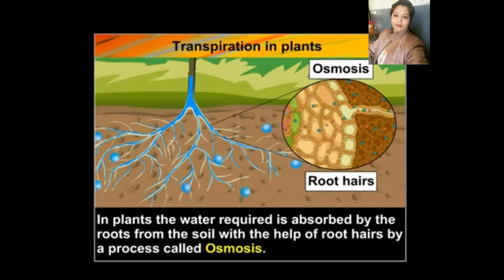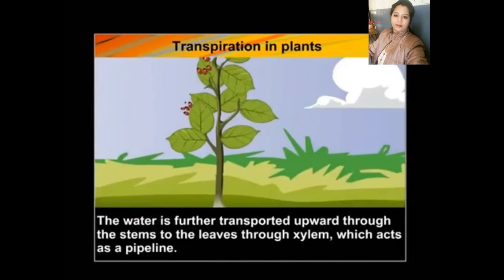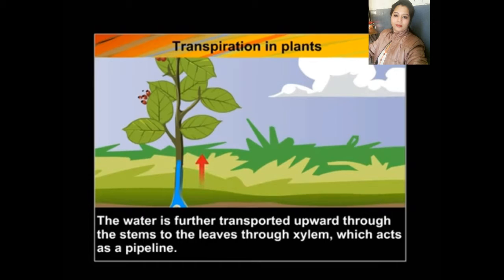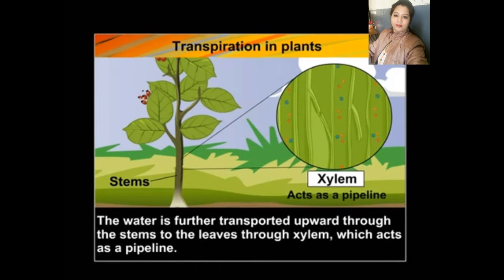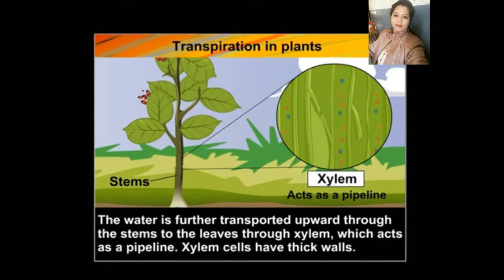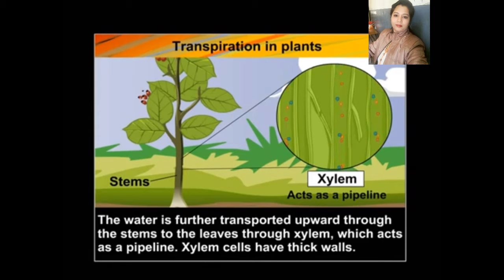The water is further transported upward through the stem to the leaves through xylem, which acts as a pipeline. Water is transported from the stem to the leaves through xylem vessels, which function like a pipeline. Xylem cells have thick walls.